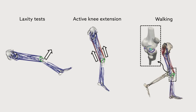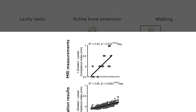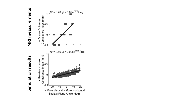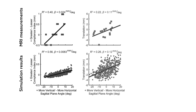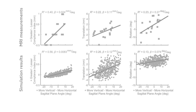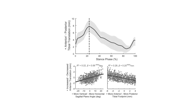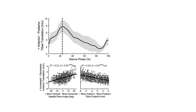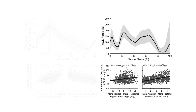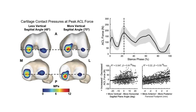Both the MRI measurements and the simulations revealed the same pattern. A more vertical graft in the sagittal plane was significantly related to greater knee laxity, greater anterior tibial translation, and greater internal tibial rotation during active knee extension. These effects carried over to the simulations of walking. In addition to allowing for greater anterior tibial translation, a more vertical ACL graft led to greater ACL loading and a posterior migration of contact on the tibial plateaus.